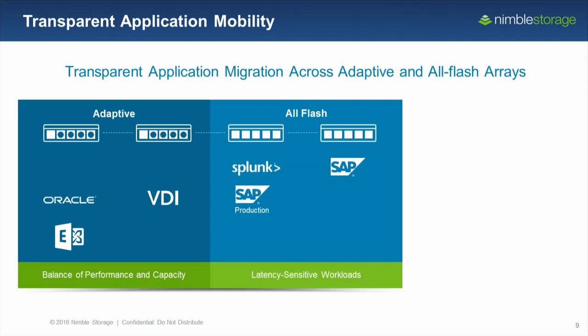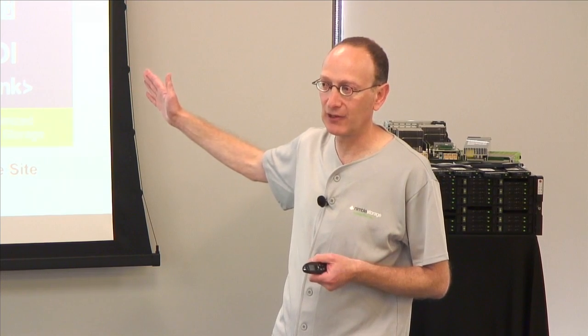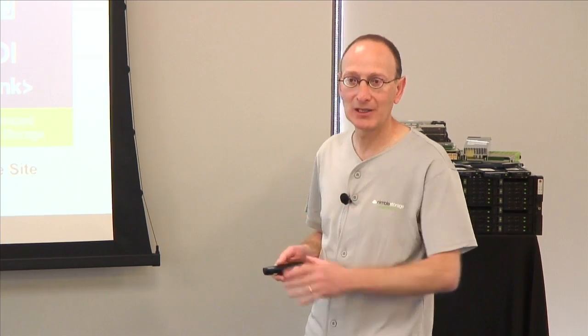An even more important characteristic is to think about backup, DR, and archival. The world is moving towards primary workloads on all-flash. However, when it comes to backup, DR, and archival, it doesn't always make sense to put them on all-flash. We can replicate to another all-flash array, but we can also replicate to a cost-optimized adaptive configuration at a fraction of the cost without really giving up anything. That's what we mean by a unified flash fabric.